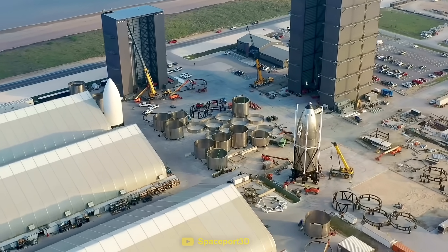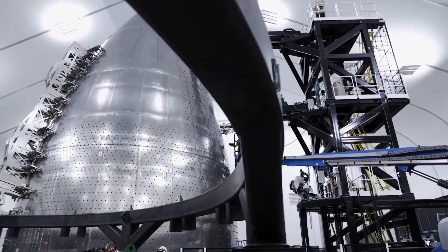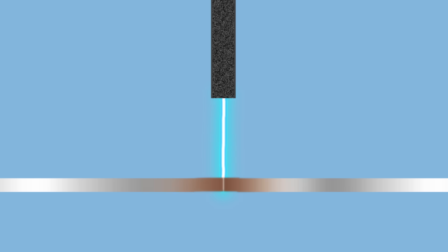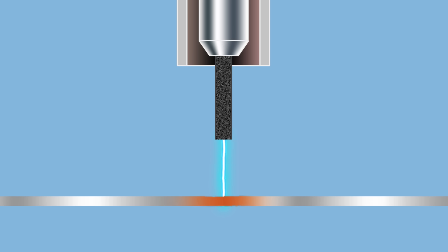But SpaceX didn't stop there. By now, SpaceX has likely moved onto laser welding for many of Starship's sections. With laser welding, the heat is much more concentrated and goes deeper into the metal, allowing the ring segments to be welded in a single pass.